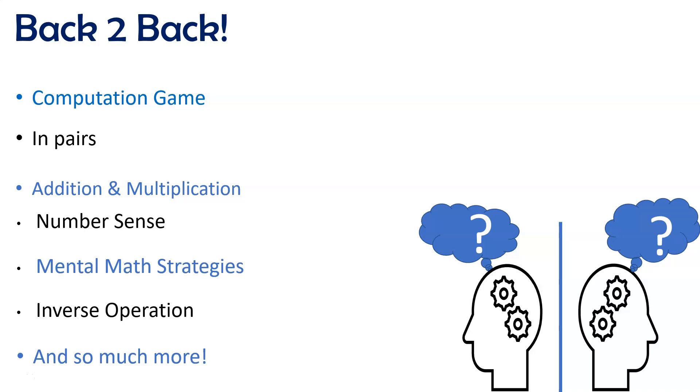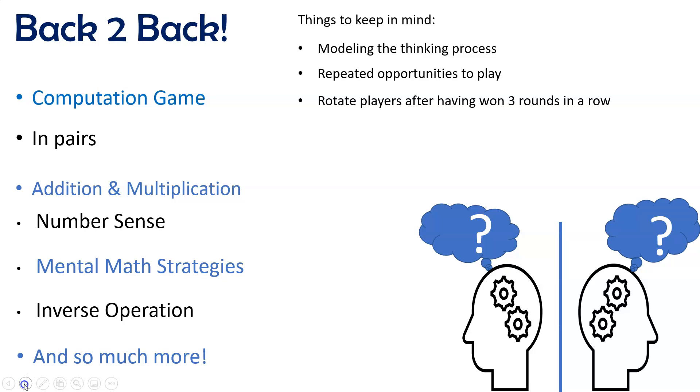As you can see here, the benefits of playing back-to-back are many. But here are a few pointers to keep in mind. When you first introduce the game, make sure to model the thinking process. And this may need to be done several times before students become comfortable with it. Also make sure that students have repeated opportunities to play the game. And you'll notice that their computational fluency begins to improve. You also want to ensure that you rotate players. So after a student wins 3 rounds in a row, then you'd want to change that student out and bring up 2 new players. Last but not least, consider giving a small treat to the winner. That will definitely increase students' interest in learning to play the game well. And in turn, learn their facts.